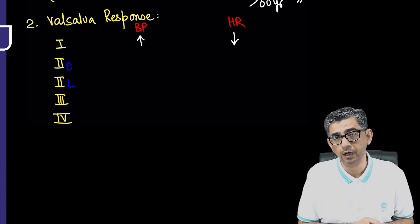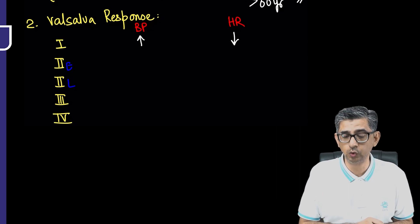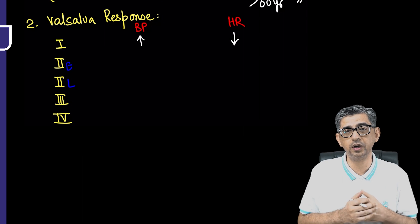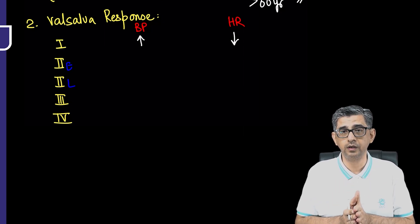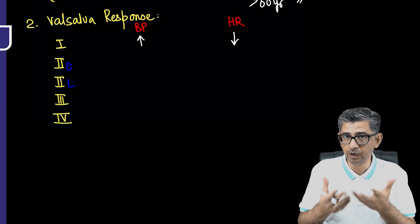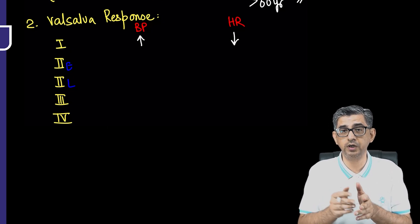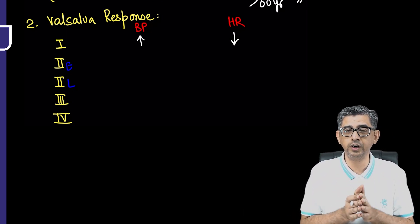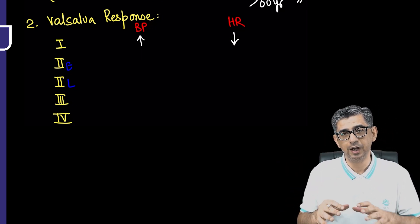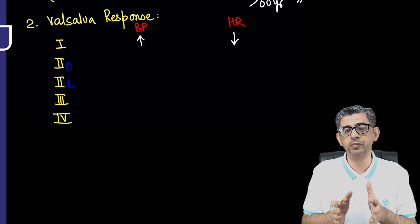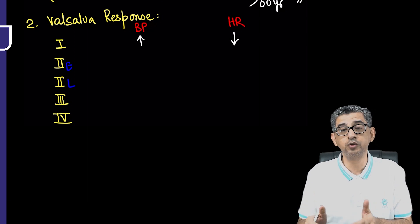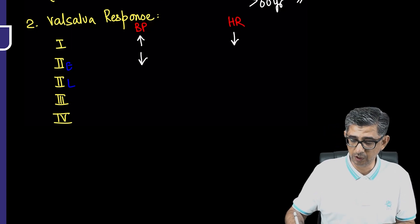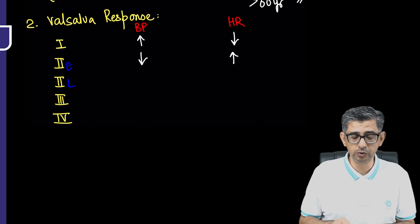In the early part of Phase 2 of the Valsalva response, the intrathoracic pressure continues to increase and begins compressing the venous return. In Phase 1 the pressure was on the aorta causing a slight BP increase, but now as pressure increases further in the chest it will reduce venous return to the heart. If venous return becomes less, BP will also become less, and therefore the heart rate will show the opposite response — a rise.